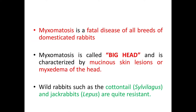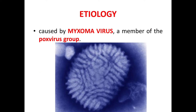Myxomatosis is a fatal disease of all breeds of domesticated rabbits. It is called big head and is characterized by mucinous skin lesions or myxedema of the head. Wild rabbits such as cottontail Sylvilagus and jackrabbits Lepus are quite resistant.